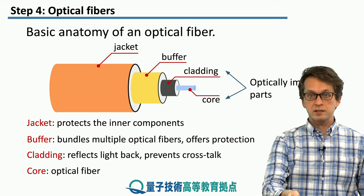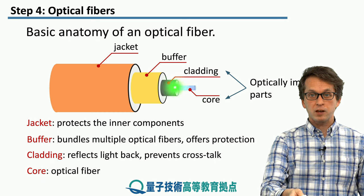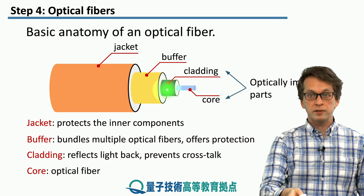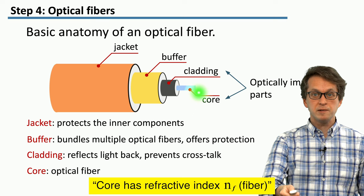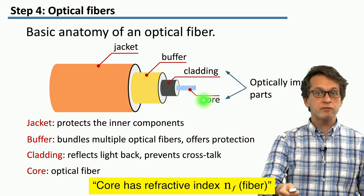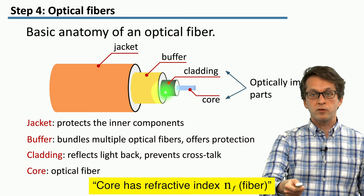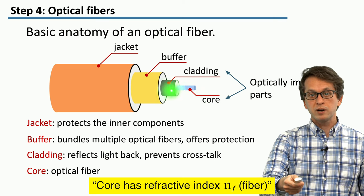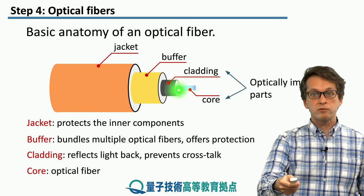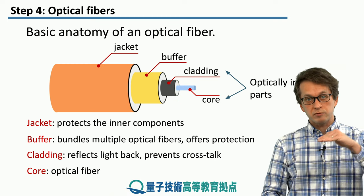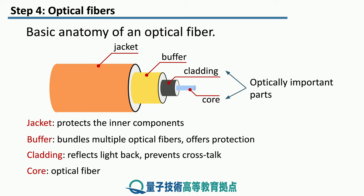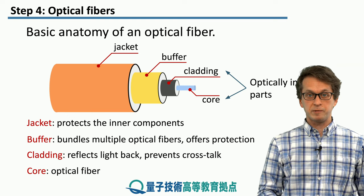So these two components are the optically important parts. The core is the one that carries the light signal and it has some refractive index NF for fiber. Whereas the cladding has a smaller refractive index NC, and that's the one responsible for reflecting light back into the core and keeping it contained inside the fiber.